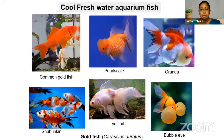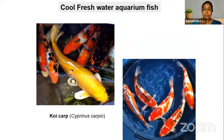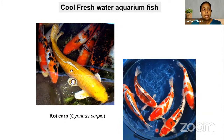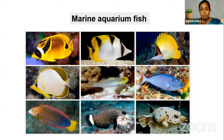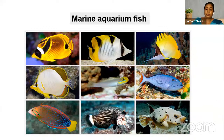The cool freshwater aquarium fish farmed in Sri Lanka are mainly goldfish and koi carps, with many varieties of each. Koi carps are popular as pond fish because they look more attractive from the dorsal view. Sri Lanka also exports many different colorful marine aquarium fish caught by divers — these represent the different types of ornamental fish, either farmed or exported from Sri Lanka.